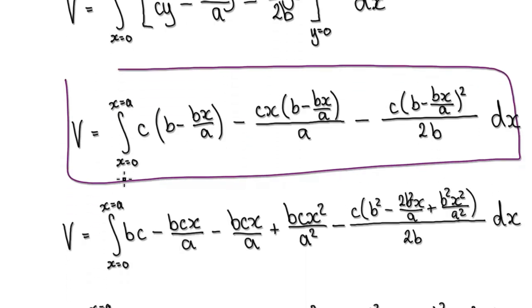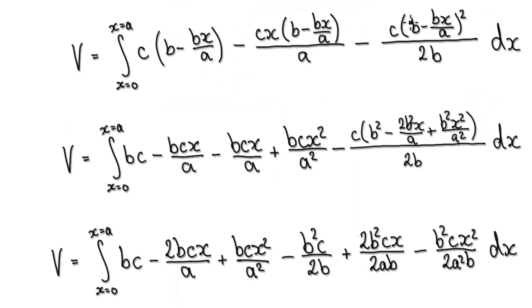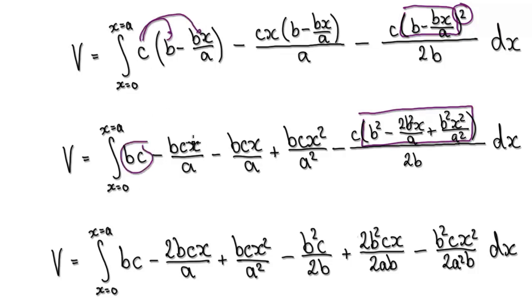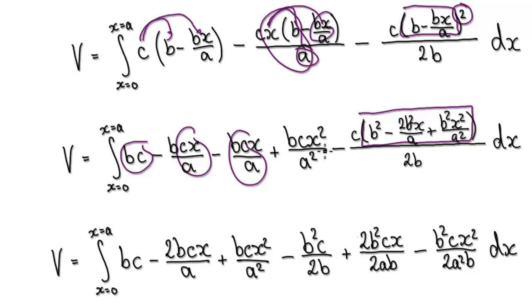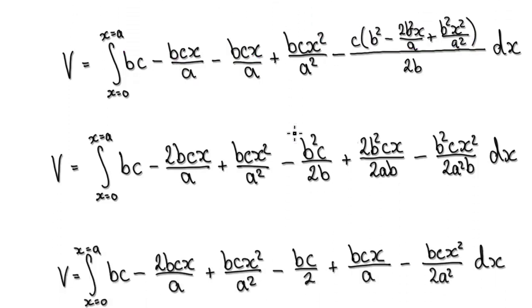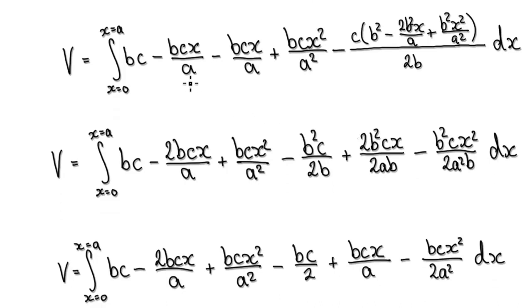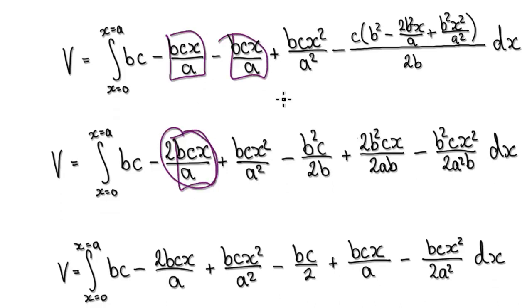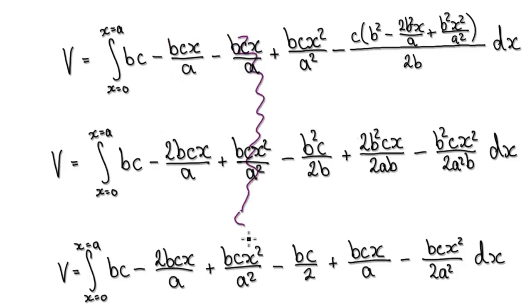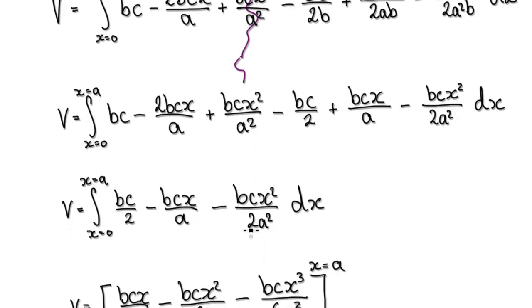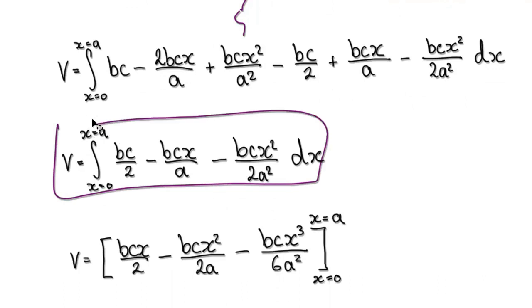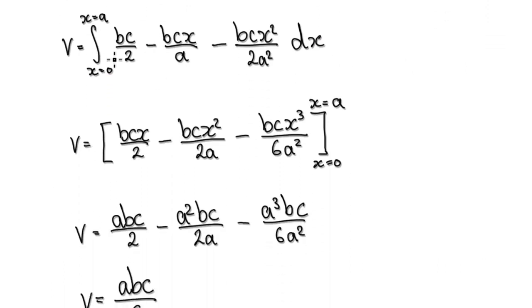Now it's just a matter of tidying everything up. If you square the bracket and multiply everything out, combining like terms — noting that two of the terms are exactly the same — tidying that up takes you to a simplified expression ready to integrate with respect to x.